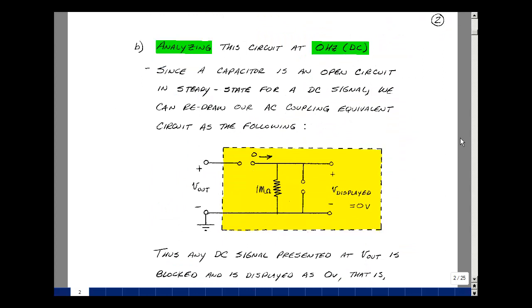Let's analyze that same circuit at much lower frequencies than 70 hertz, say DC. Since the capacitor is an open circuit in steady state for DC, we can redraw our AC coupling equivalent circuit as the following: an open circuit for the 0.022 microfarad capacitor, and also an open circuit for the 8 picofarad capacitor.